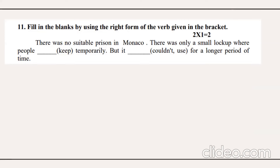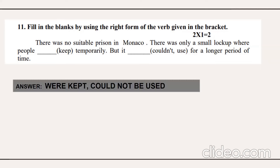Question number 11: fill in the blanks using the right form of the verb given in brackets — active and passive voice, for two marks. There was no suitable prison in Monaco, only a small lockup where people were kept temporarily. Since 'people' is plural, the helping verb is 'were' and the past participle of 'keep' is 'kept.' The second blank: 'could not be used' for a longer period. So the answers are 'were kept' and 'could not be used.' You can copy the full passage and underline the answers.